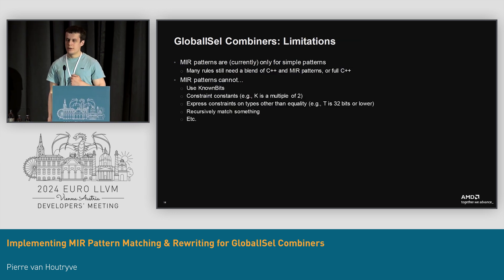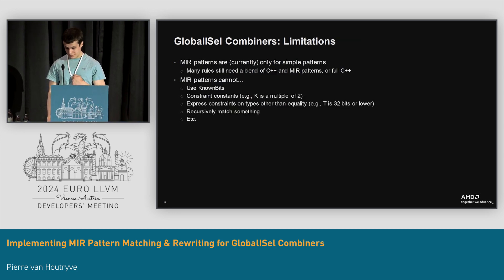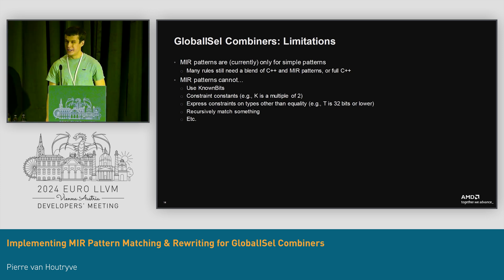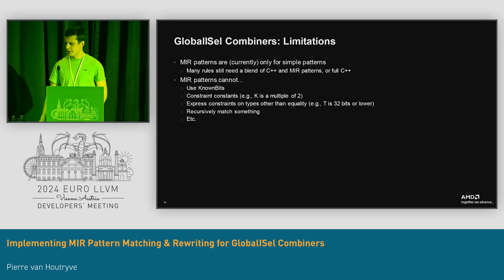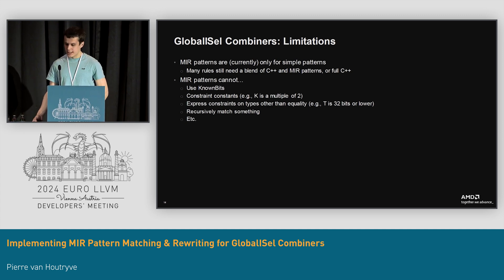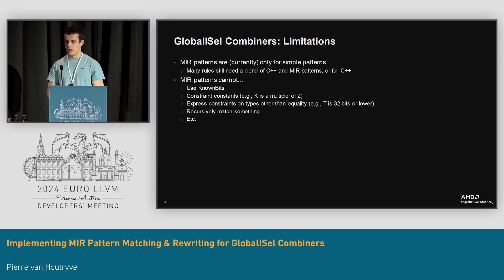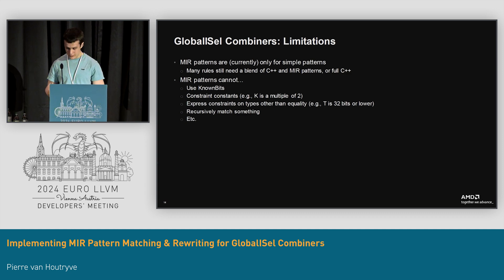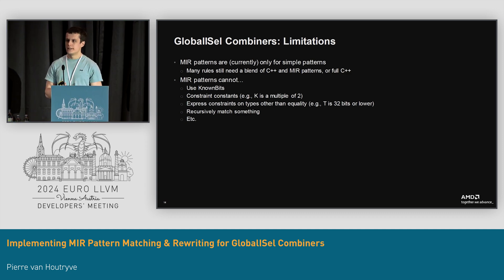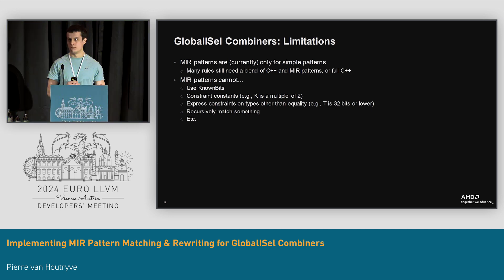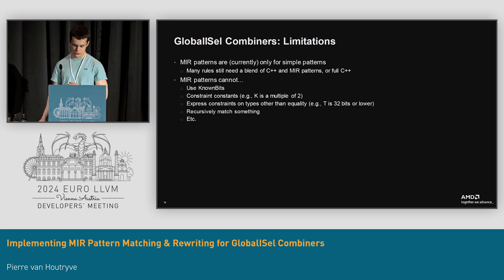MIR patterns are not perfect at all. They currently only work for simple patterns — the majority of rules still use C++. MIR patterns also cannot use things like known bits constraints, express more complicated constraints like constants that are a multiple of two, et cetera, nor can they do recursive matching — the tree has to be somewhat fixed ahead of time. This is a trade-off; some patterns would be a bit too annoying to express using TableGen and are sometimes just easier to do in C++.